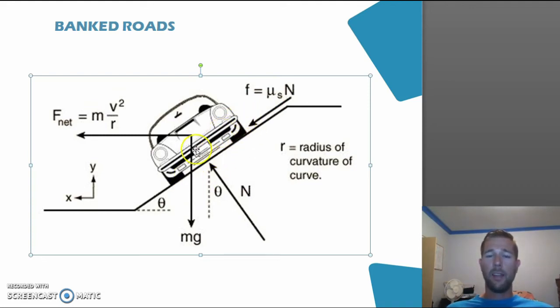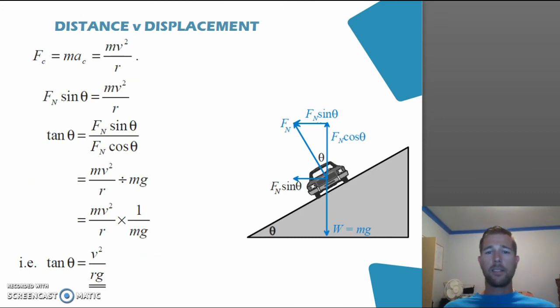However, with the banked track, these forces can be balanced. The car will remain in the constant circular motion around the track, with the force due to the banked racetrack, and the force pulling the car in this direction being balanced. So the centripetal force that keeps the car travelling in a circular motion is given by this equation here, which we worked at in previous lectures.